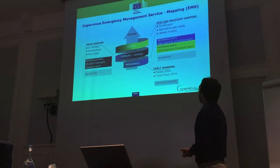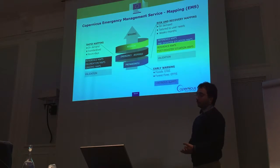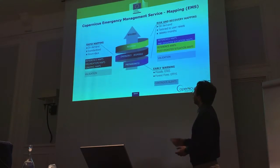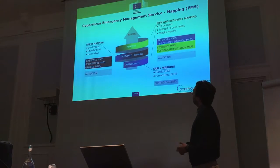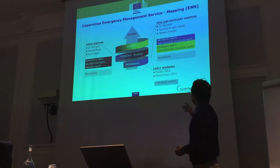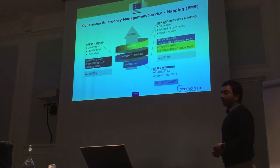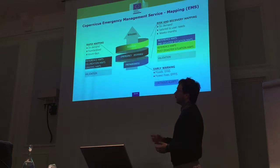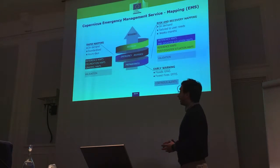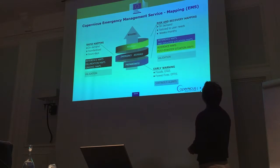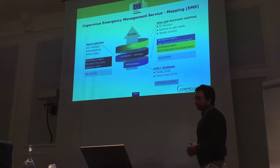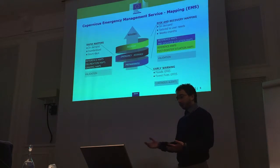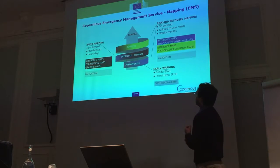The Emergency Management Service works on emergency, as the name says, on all phases of the emergency. These are the three main areas: preparedness, with early warning, flood alerts, and forest fire alerts; rapid mapping, which is during the emergency and is a service that we run and manage; and risk and recovery mapping and validation, which is the later phase where more detailed products are released.